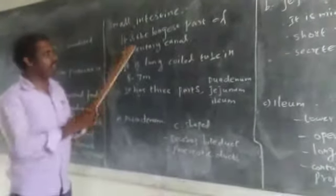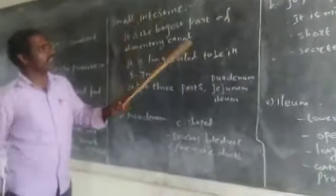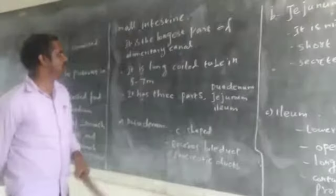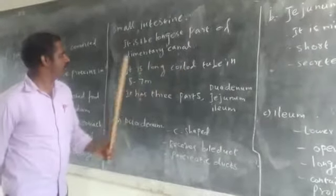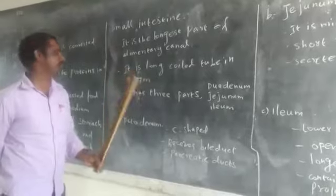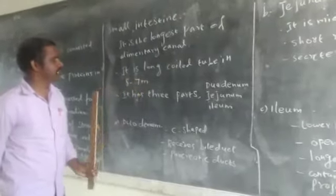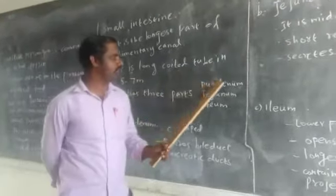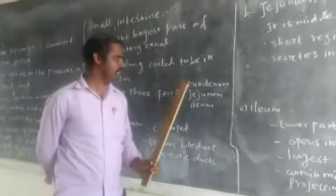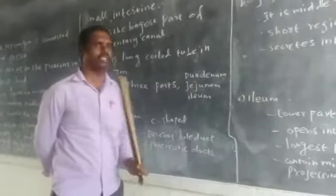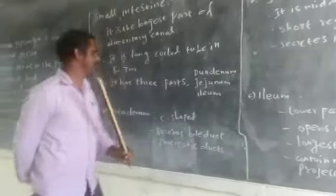Small intestine is the longest part of our alimentary canal. It is 5 to 7 meters long. It has 3 parts: duodenum, jejunum, and ileum.